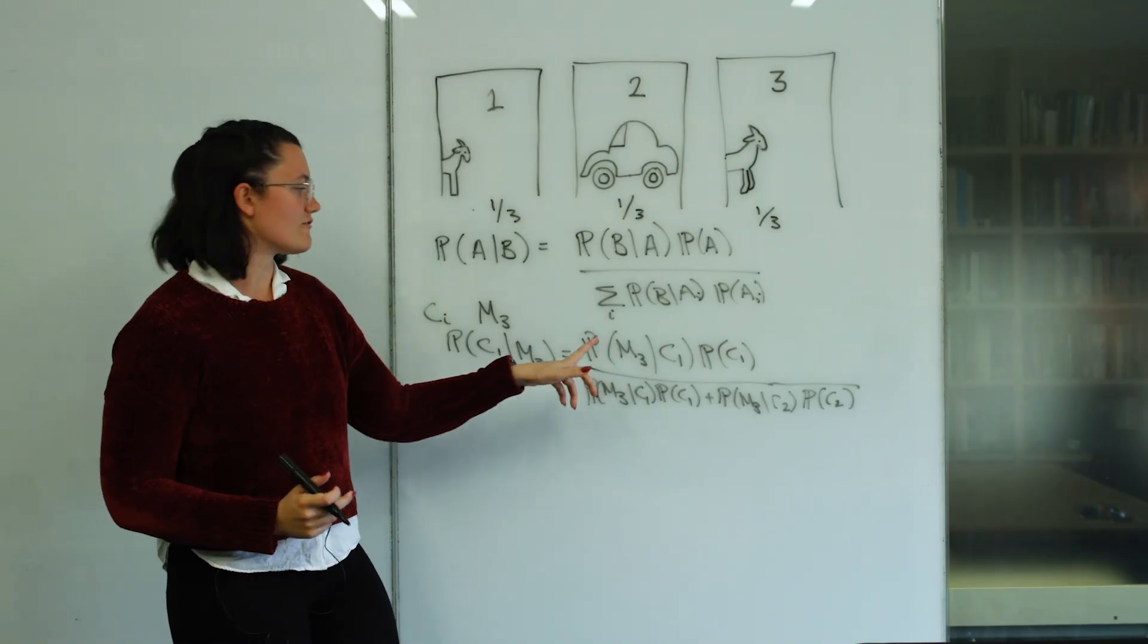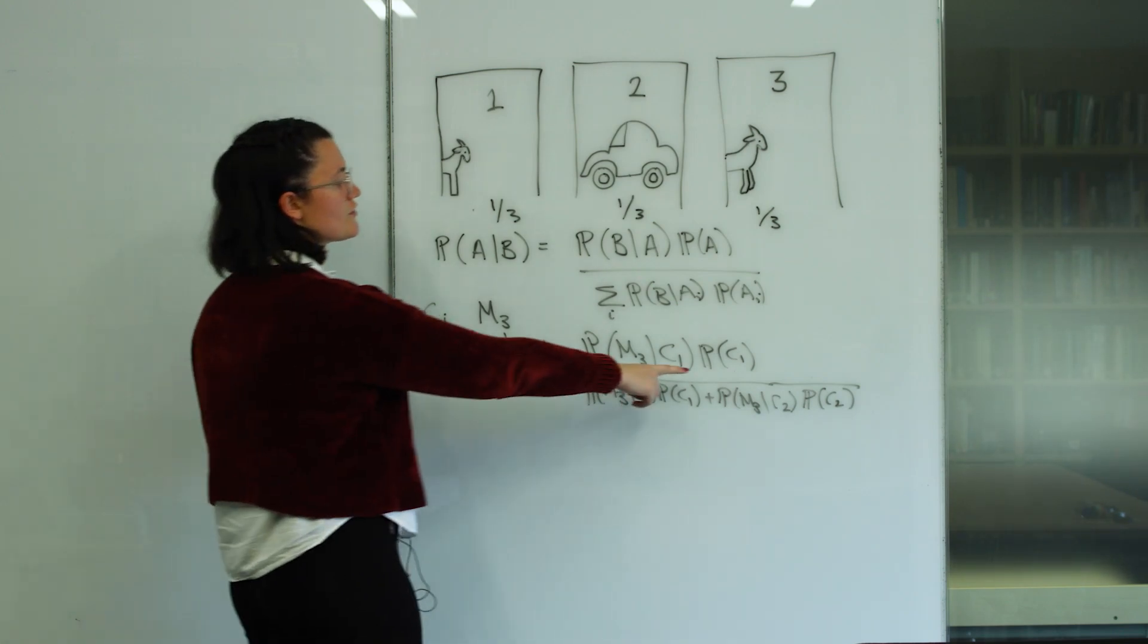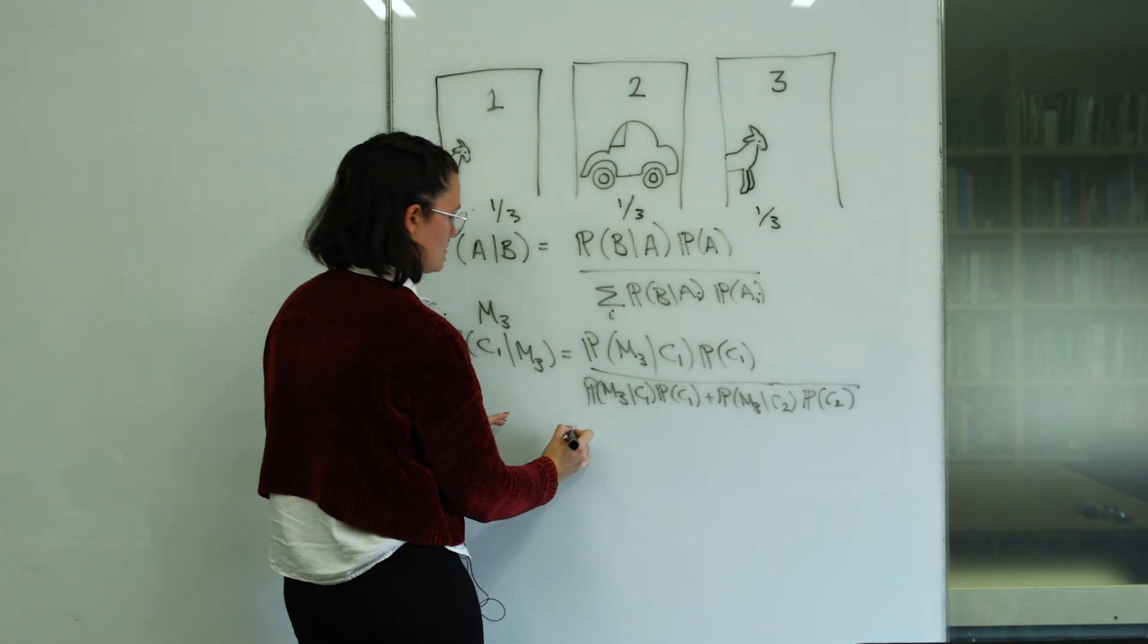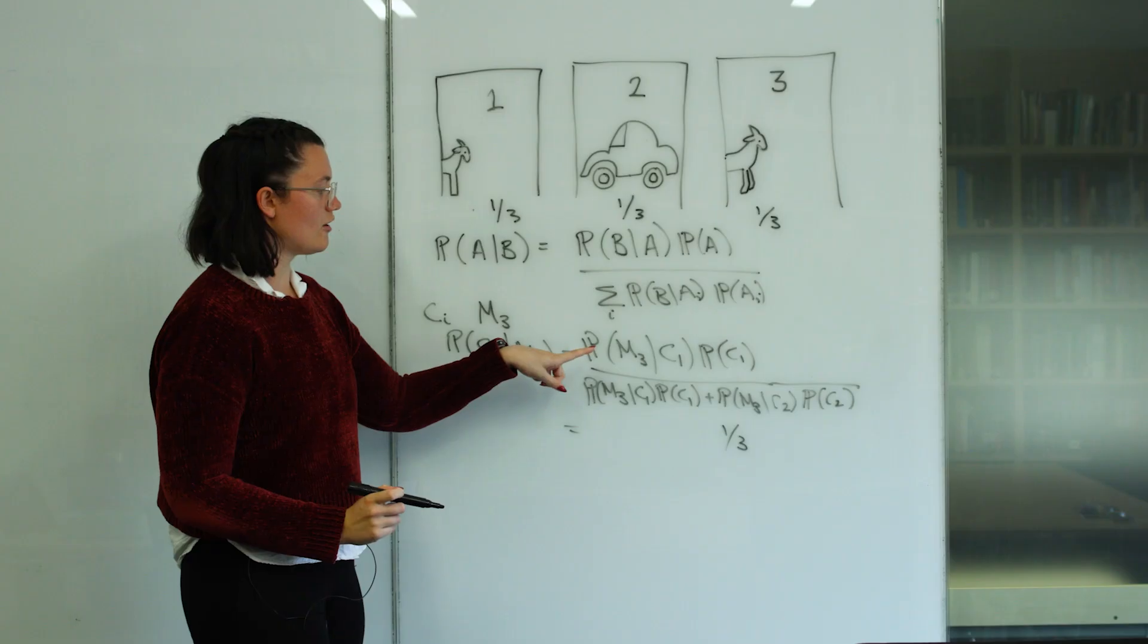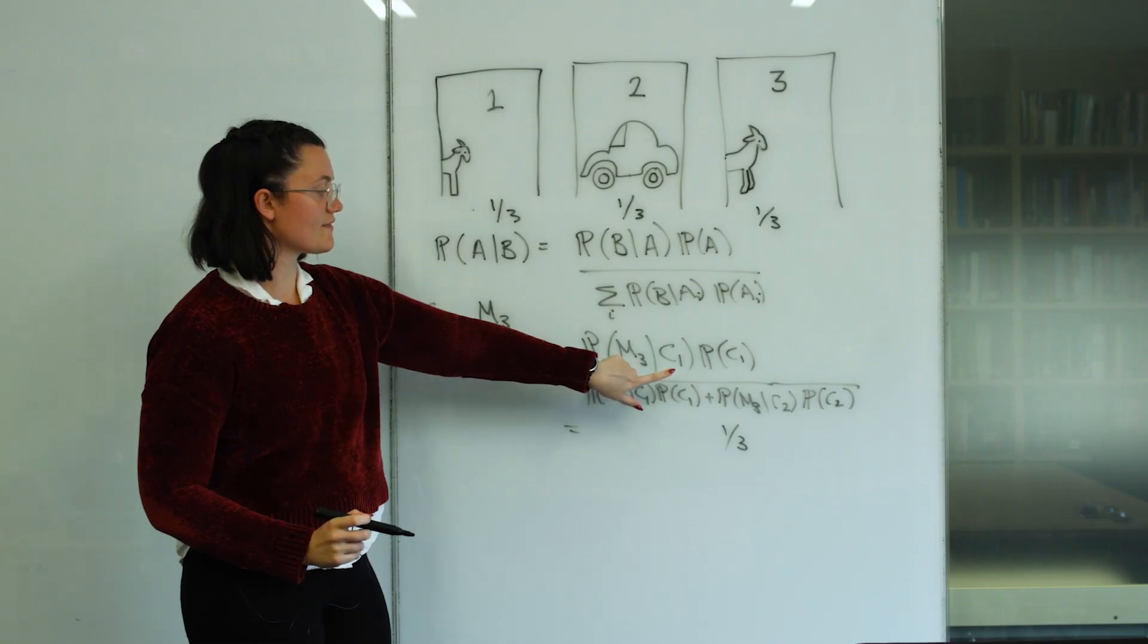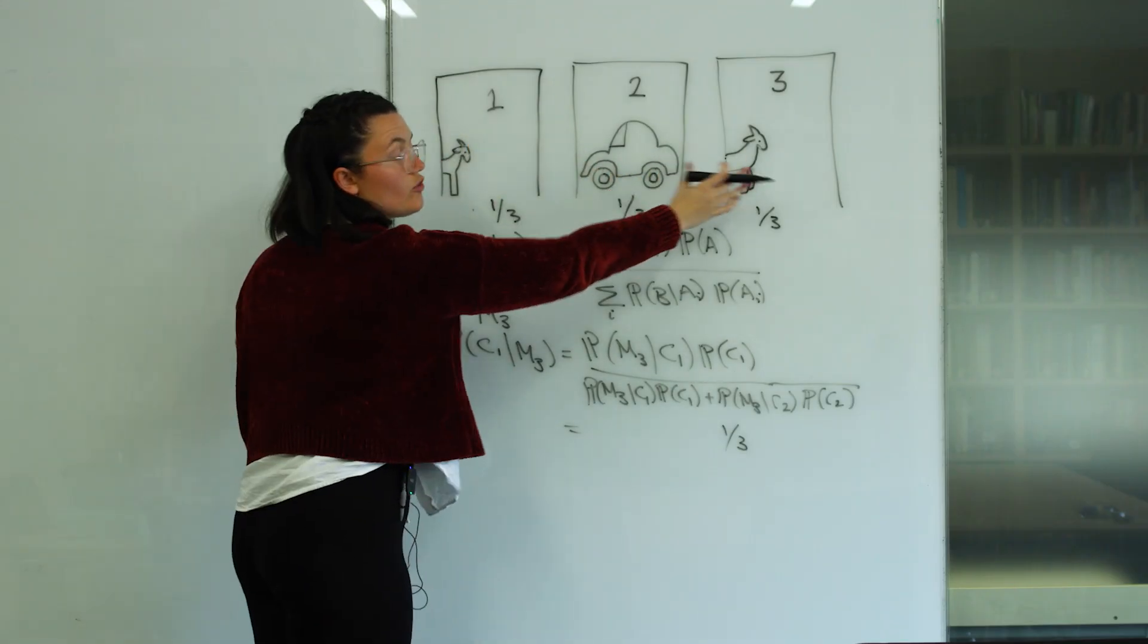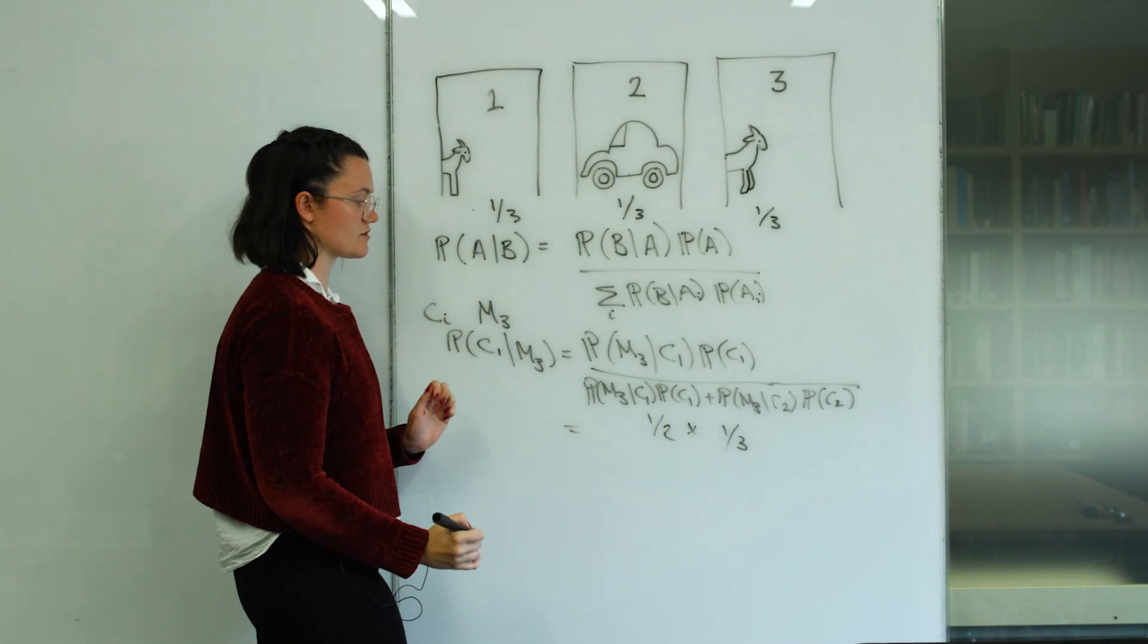So now we just need to work out the value of each of these probabilities in this equation. So we know that independently, the probability that the car is behind door one is a third. And we know that the probability of Monty opening door three, given that the car is behind door one, is a half, right? If the car was here, he could open this door or this door and it wouldn't matter. So it's a half times a third on the top.